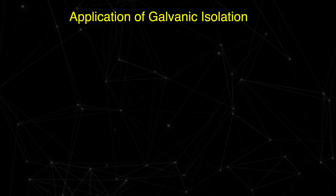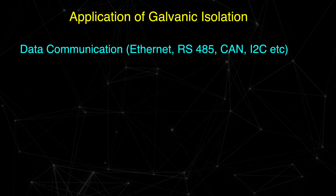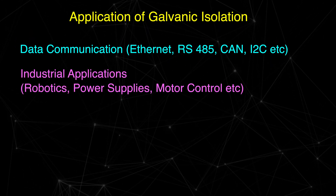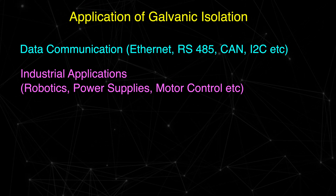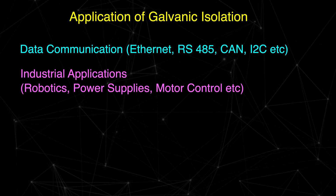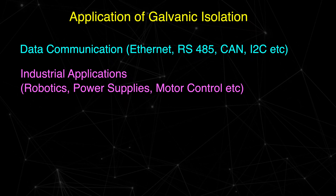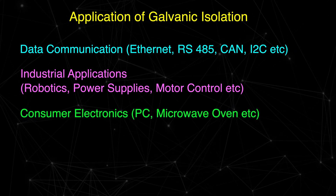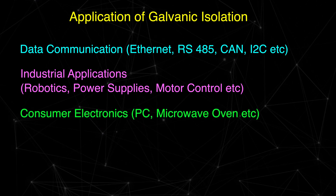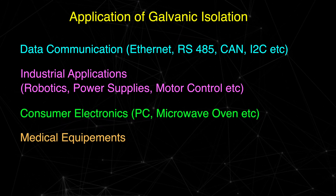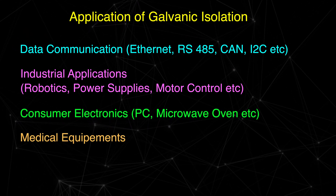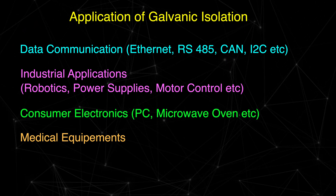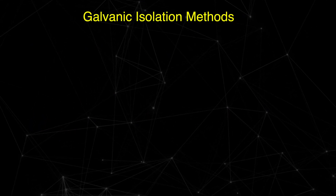Galvanic isolation is used in data communications using RS-485 and Ethernet. Apart from that, it is also used in many industrial and consumer-level applications. For example, in industrial applications it is used in robotics, motor control, and power supplies. Similarly, it is also used in consumer and home appliances, as well as in medical equipment which is directly connected to patients.